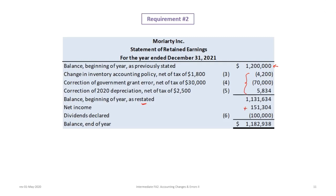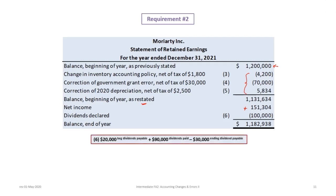To the restated opening balance we add net income of $151,304, then subtract dividends declared. To calculate dividends declared, we reconstruct the dividends payable T-account: beginning balance of $20,000 plus declared dividends minus $90,000 paid equals an ending balance of $30,000, so dividends declared were $100,000. Our retained earnings balance at the end of the year is $1,182,938.